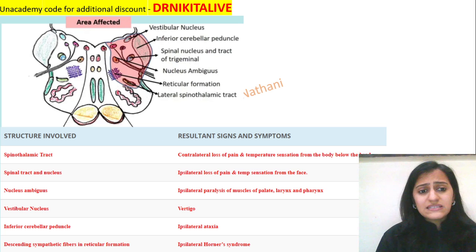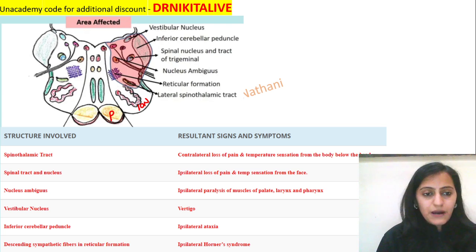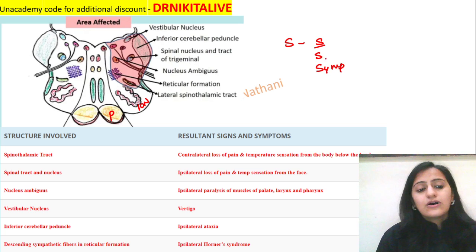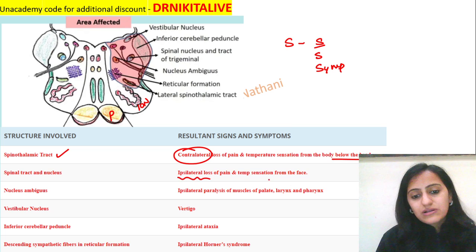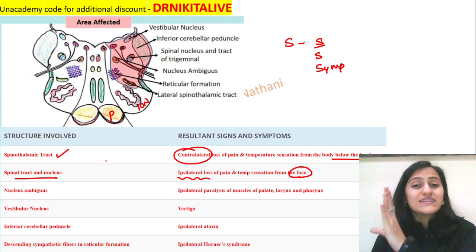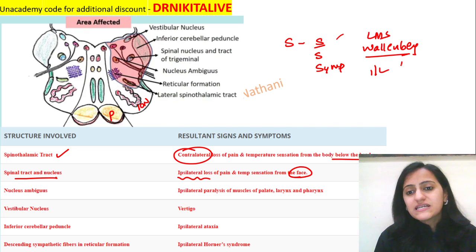Now for the lateral medullary syndrome. Looking at the cross-section, you can see the pyramid and the inferior olivary nucleus — this is very important as it can appear as an image-based question. The spinothalamic tract is affected, causing contralateral loss of pain and temperature from the body below the head. From the face it is the same side: ipsilateral loss of pain and temperature from the face, because the trigeminal spinal nucleus is involved. So in Wallenberg syndrome it is ipsilateral face and contralateral rest of the body for pain and temperature loss.